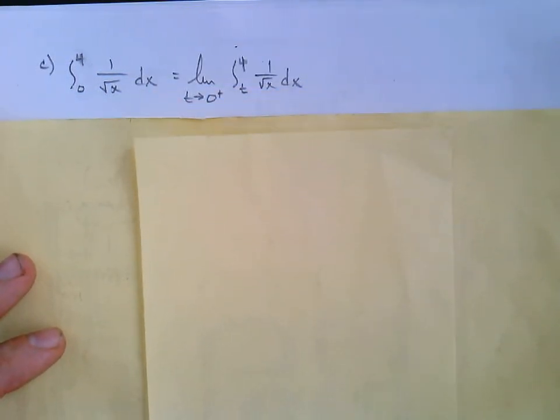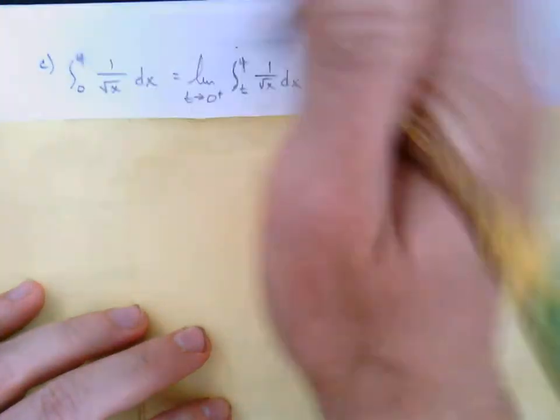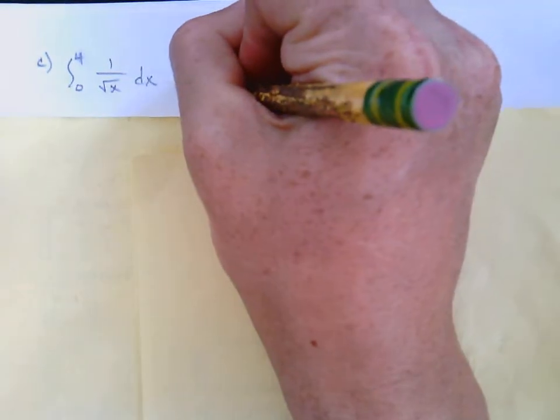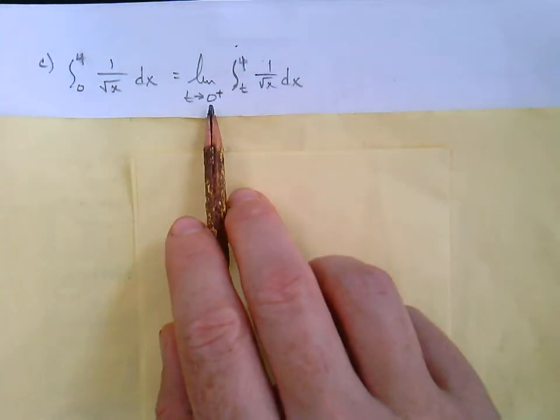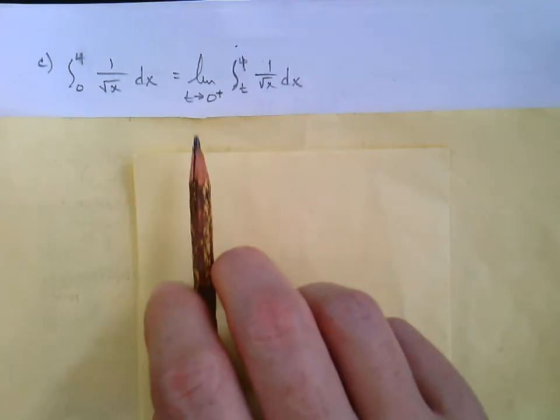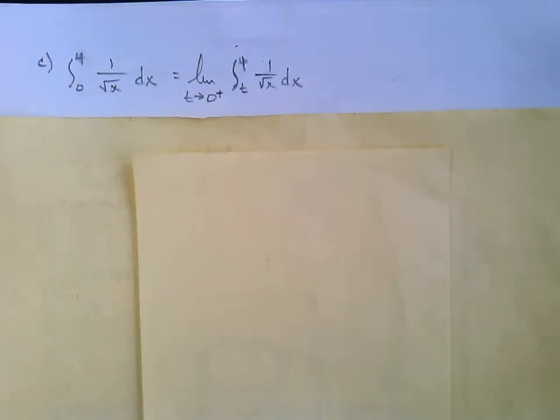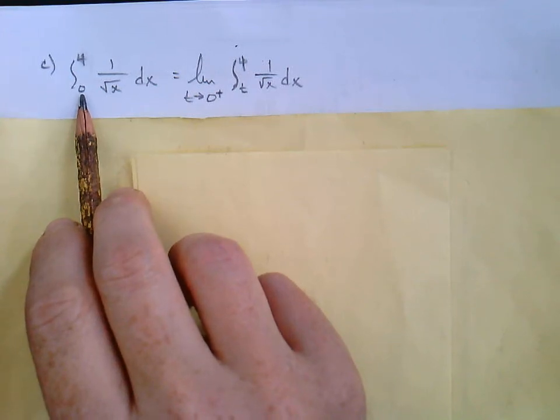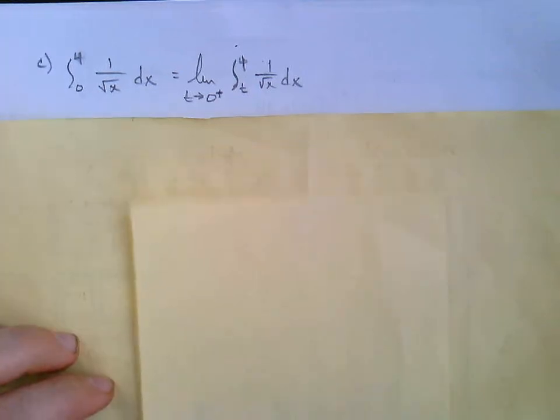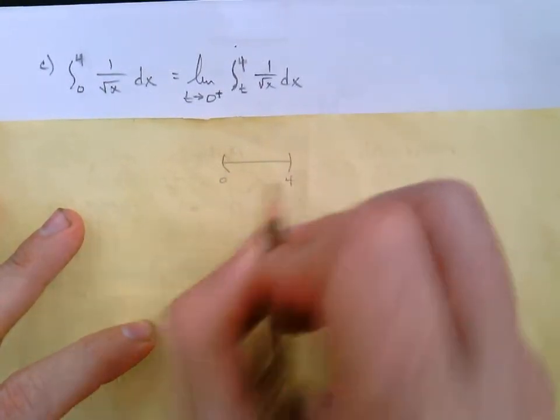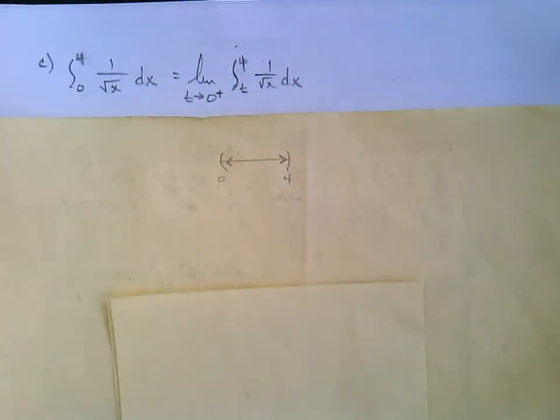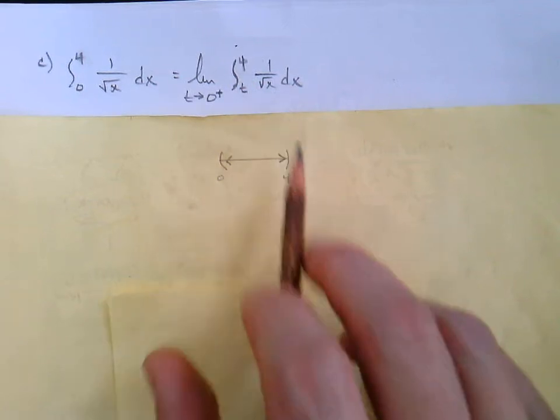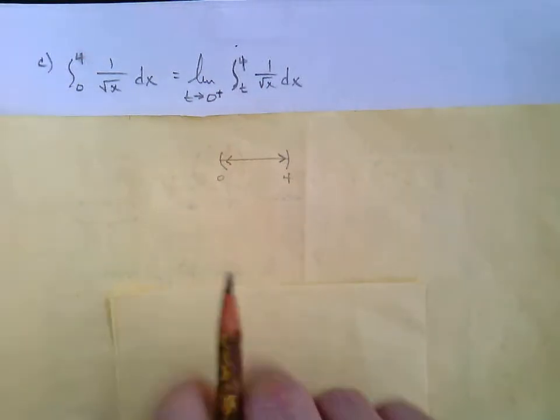So what are we going to do? First thing is to rewrite it with a limit. And again, you got to be a little bit more careful. We're going to put the t in for where it's not continuous. So we'll say t to 4. The limit is not simply t approaches 0. When you approach a number like this, you got to specify, are we approaching from the left or from the right? Well, if the 0 is on the lower limit, then we're approaching it from the right.